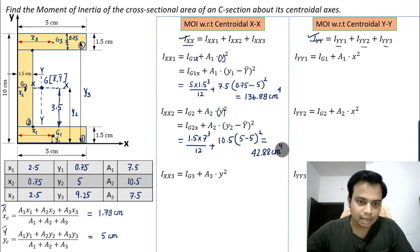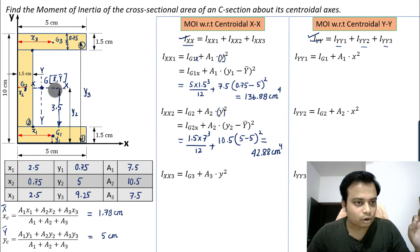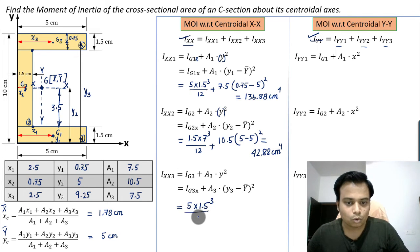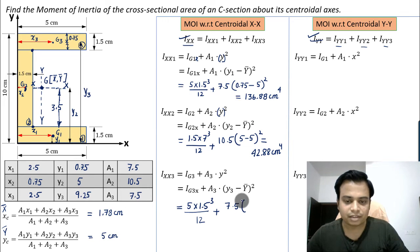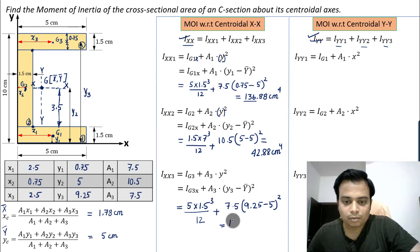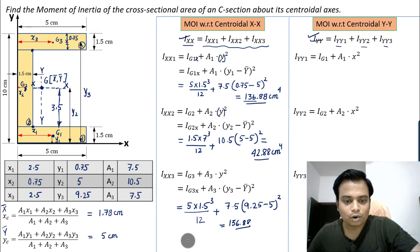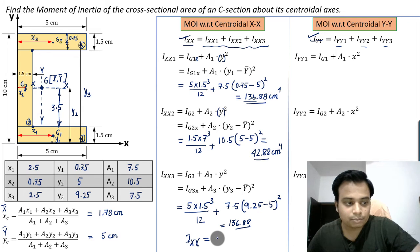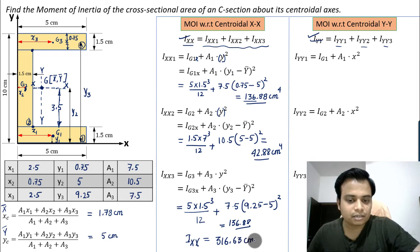For rectangle 3: Ig3x = (5 × 1.5³)/12 + 7.5 × (y3 − ȳ)². With y3 = 9.25 and ȳ = 5, we get (9.25 − 5)². The final value is Ixx3 = 136.88 cm⁴. Summing all three, the total moment of inertia of the C-section with respect to its centroidal X-X is 316.63 cm⁴.